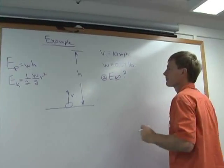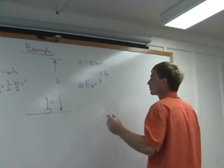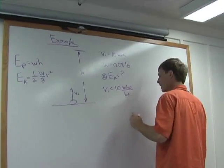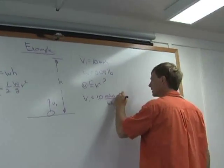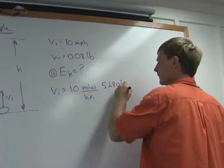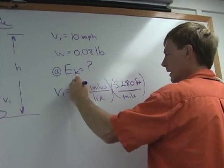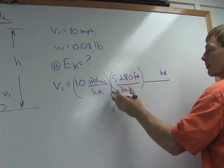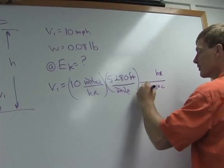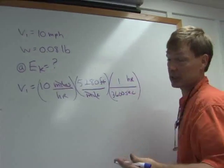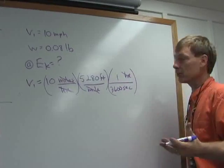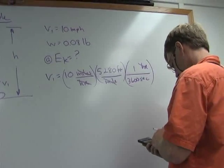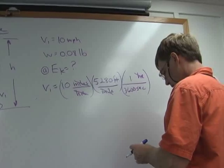Part A: What's the kinetic energy of this thing? First, I've got to get the velocity in terms of feet per second. So velocity one is 10 miles per hour. There are 5,280 feet in a mile — that cancels out the miles. I've got feet per hour. I need to get rid of hours, so I use 3,600 seconds in an hour. The hours cancel, and we've got feet per second.